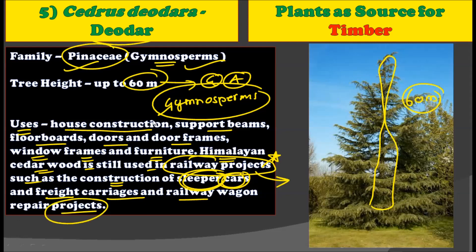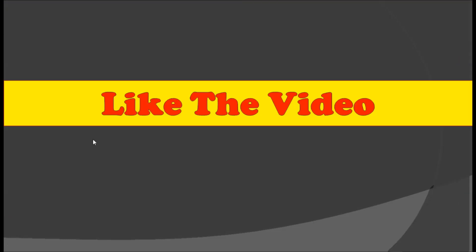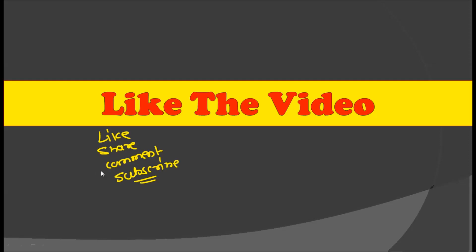The fifth plant for timber production is Cedrus deodara, a gymnosperm belonging to the family Pinaceae, growing up to 60 meters, with applications similar to other timber trees but also used in railway construction projects. I hope you liked this lecture. Please like and share this video with your friends, comment any doubts in the comment box, and subscribe to the Botany Optional channel for UPSC examination. Thank you very much for watching — see you in the next one.